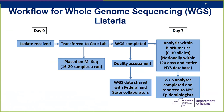Whole genome sequencing is completed, a quality assessment is done, and the data is shared with federal and state collaborators. Analysis occurs within BioNumerics. We look nationally within 120 days, and anything within zero to 30 alleles is reported as a cluster. We also look against our New York State-specific database in its entirety, not limited to 120 days. That entire time frame has been taking about seven days from isolate receipt to cluster reporting to the epidemiologist.